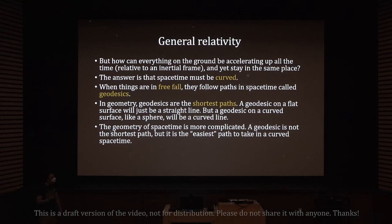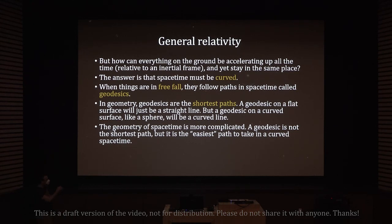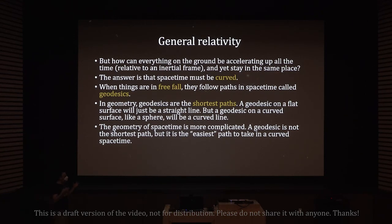You might ask: how can everything on the ground be accelerating up all the time relative to an inertial frame and yet stay in the same place? The answer — the most profound discovery from the equivalence principle — is that space-time must be curved. When things are in freefall, they follow paths in space-time called geodesics. In geometry, geodesics are the shortest paths — a geodesic on a flat surface is a straight line, but a geodesic on a curved surface like a sphere will be a curved line. Nature is lazy and always takes the easiest path, which in a curved space-time is the geodesic.